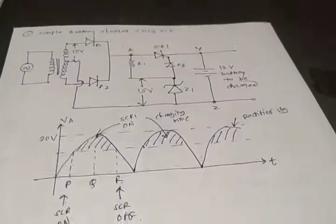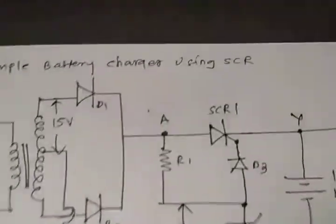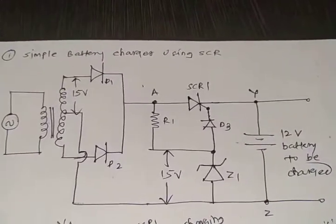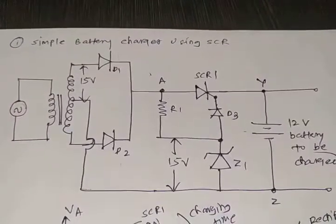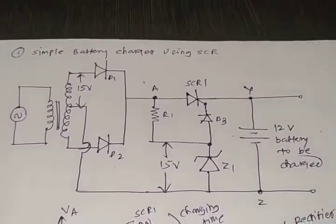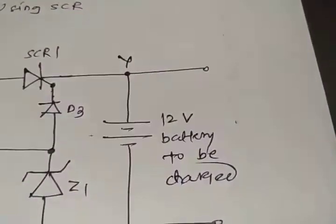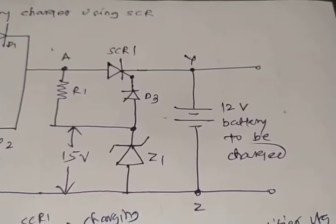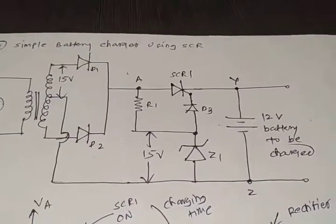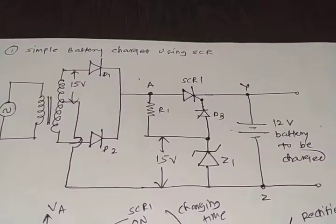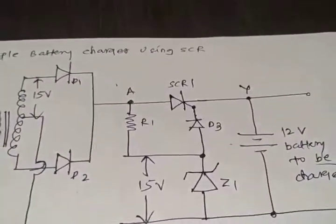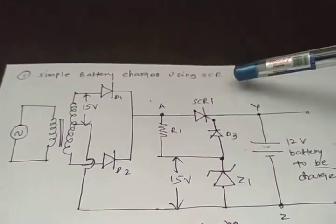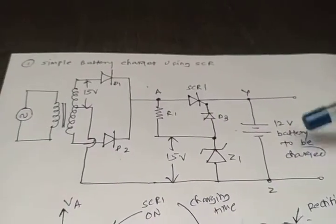Today we will start with industrial control circuits. The first circuit is called the simple battery charger using SCR. From this circuit we can observe how we can charge a 12 volt battery. The 12 volt battery connects across the load, and by using SCR1 we can charge the 12 volt battery.